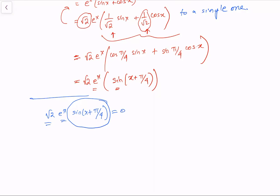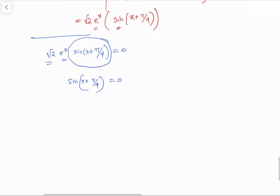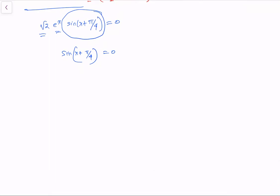Setting sine(x + π/4) = 0, we know that sine of an integer multiple of π is zero. Therefore x + π/4 = kπ, where k is any integer.